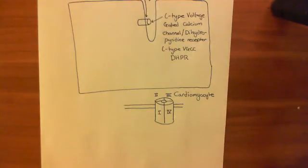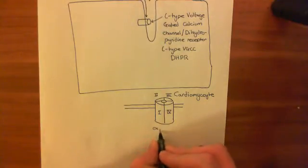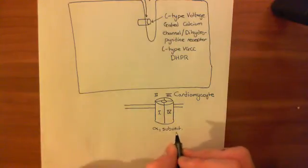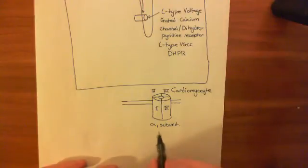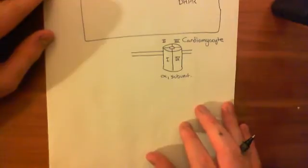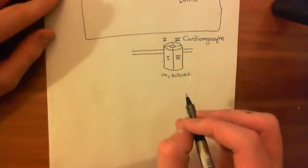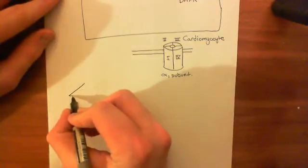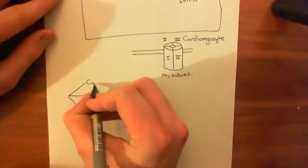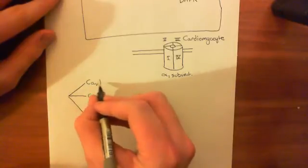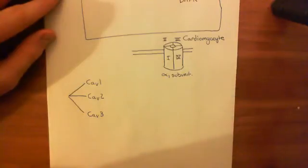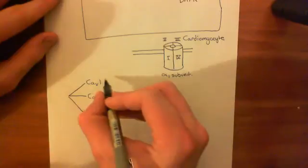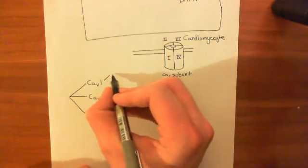These four domains are the portions of the polypeptide which make the pore, and this is known as the alpha-1 subunit of the voltage-gated calcium channel. If your voltage-gated calcium channel is of the L-type, it means that this alpha-1 subunit needs to be encoded by a certain gene. There are many genes encoding alpha-1 subunits of voltage-gated calcium channels, and they can be subdivided into three major families: the CAV1, CAV2, and CAV3 families. The CAV1 family is the one relevant to L-type voltage-gated calcium channels.